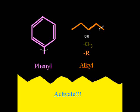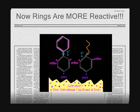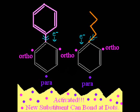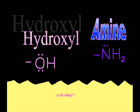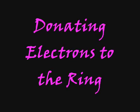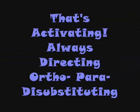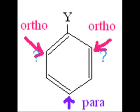The even more reactive, of course: vinyl and alkyl activate, keeping rings in a more reactive state — ortho-para direction is innate. Then amide and ether, hydroxyl and amine — amine's most reactive of the whole thing, donating electrons to the ring, that's activating, always directing ortho-para, substituting.